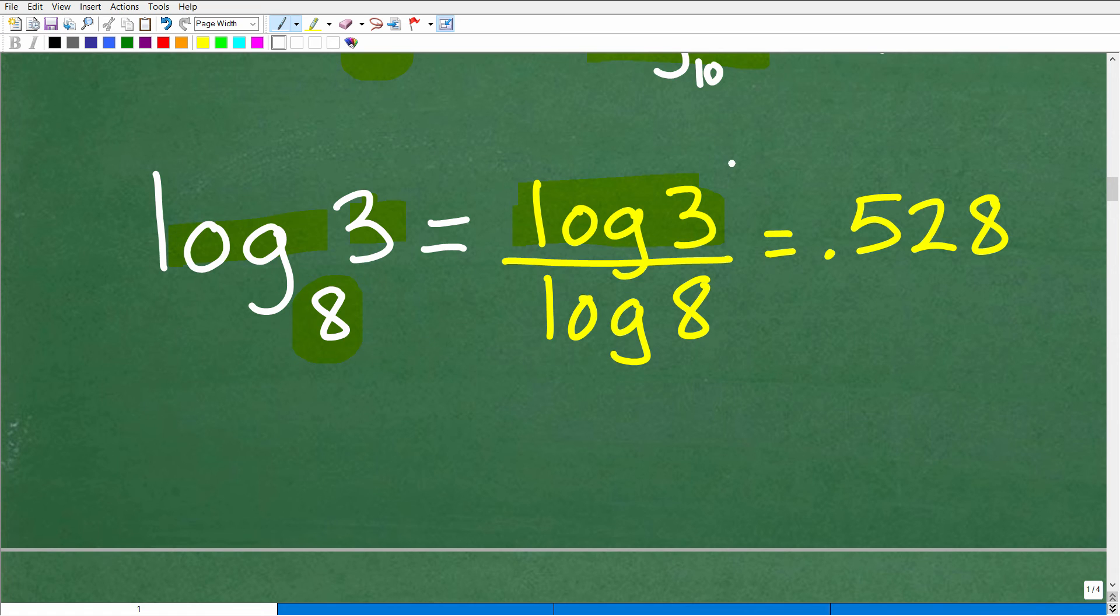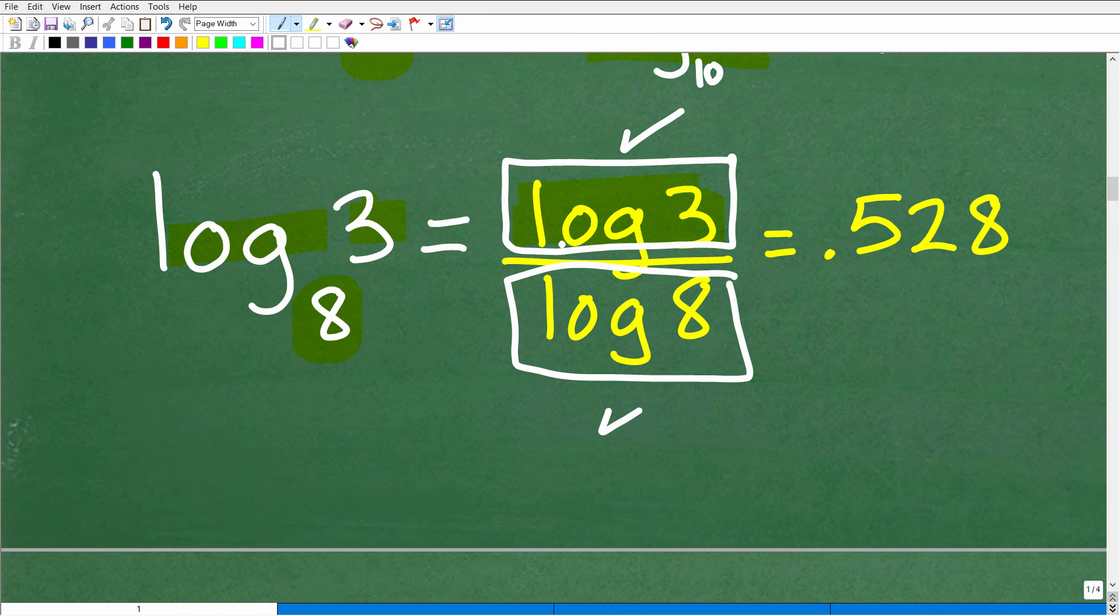So make sure you understand that. Now, here, these are, we can use the common log or the natural log in our calculator. This is what's really cool about this. So we can go into our calculator and then finally use our LOG button log base 10 to evaluate these answers. You can use the natural log as well. So now we can use our buttons on our calculator or our common log to figure this out. So this would be log 3 divided by log 8, and when you do that, you'll get 0.528.